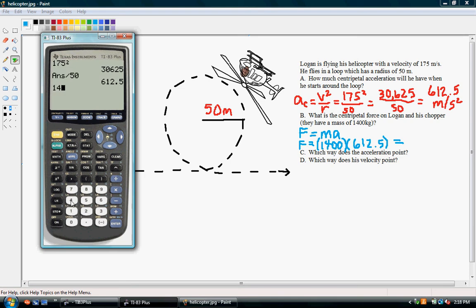So, 1,400 times 612.5, and he's actually got himself 857,000, 500 newtons of centripetal force.